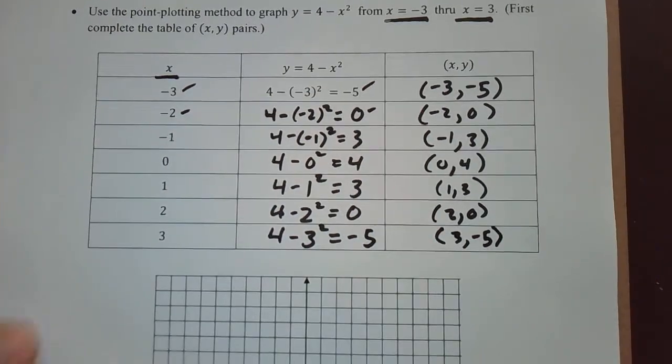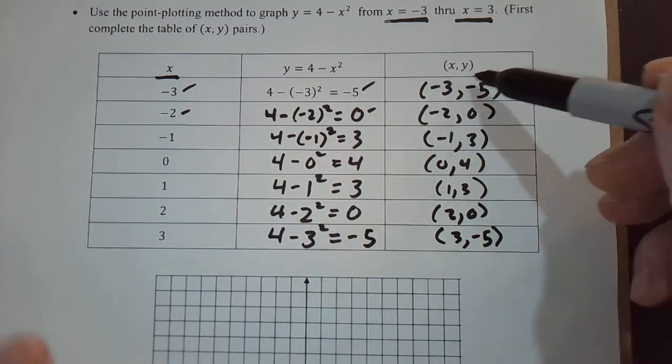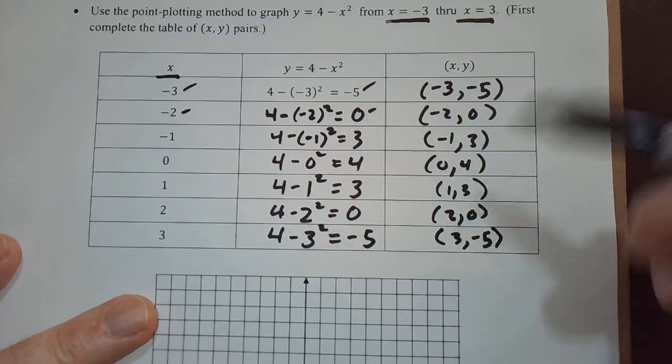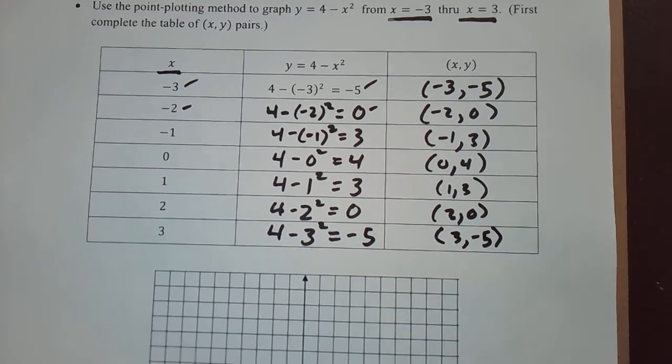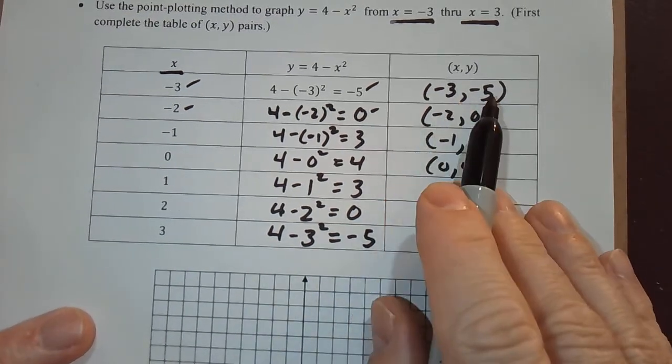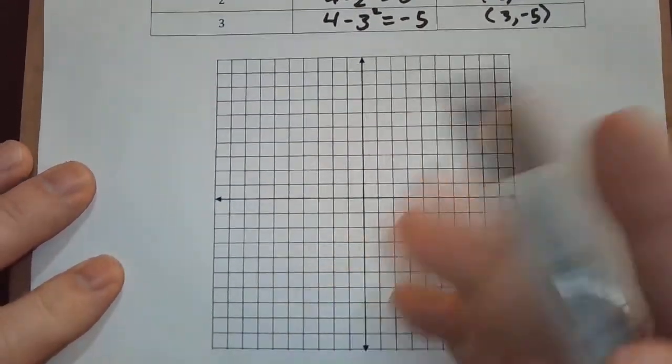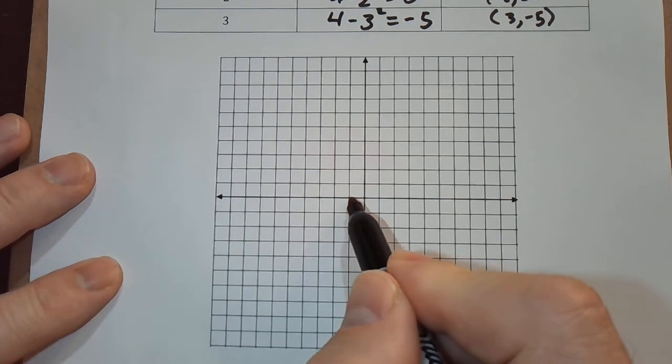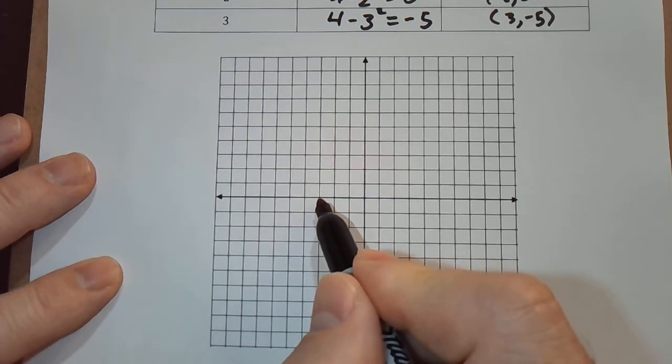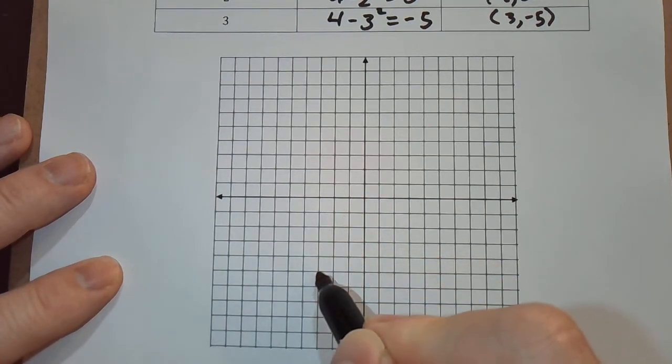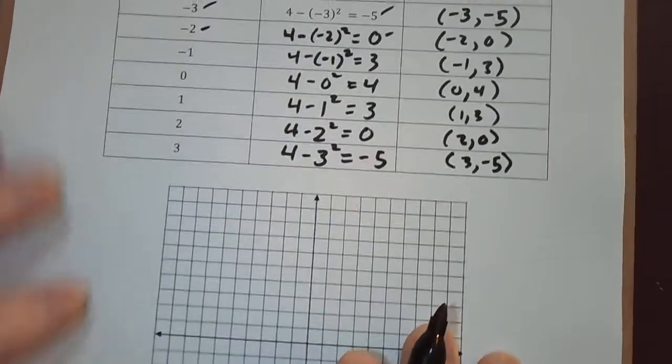We produced a table with seven ordered pairs. I'm going to plot each one of them and then we'll draw a smooth curve through all the points. So the first one is negative 3, negative 5. So I have to go negative 3, negative 5. Here's the origin. So I have to go left 3 and then down 5. 1, 2, 3, 4, 5.